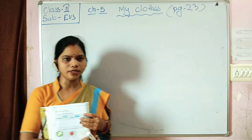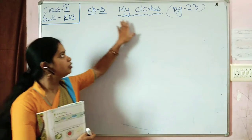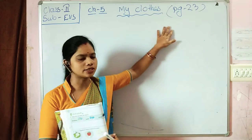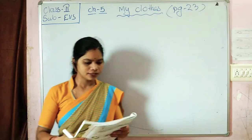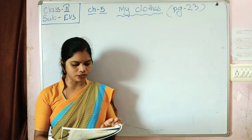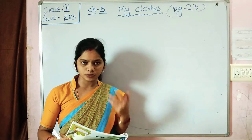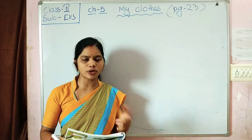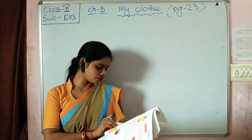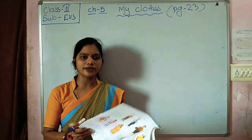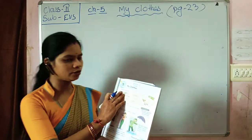Hey children, today we learn our fifth chapter, 'My Clothes,' page number 23. Here we learn why we wear clothes, what are the types of clothes, and how clothes are made.